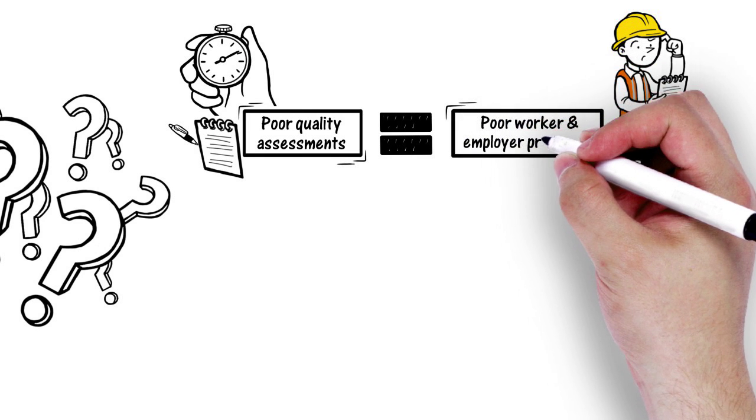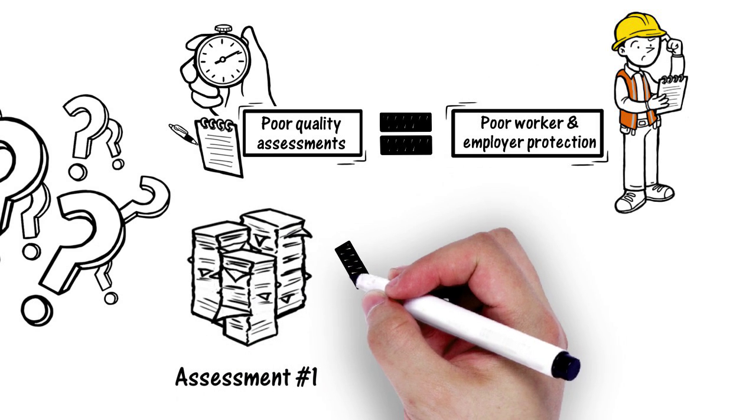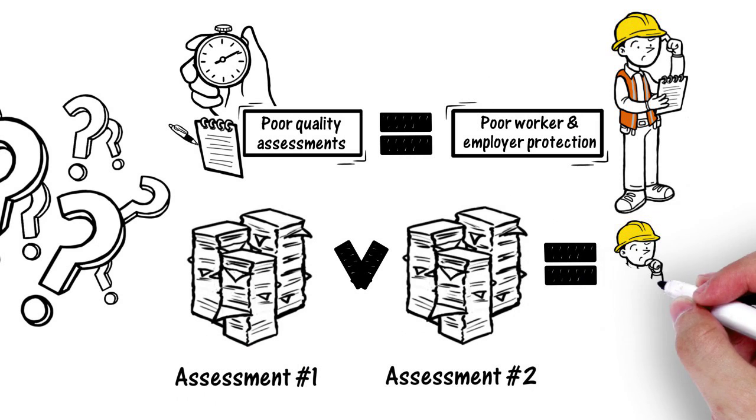All these inaccuracies can create poor quality assessments and any ongoing exposure data collation which risk reduction activities are reliant upon to protect workers' welfare. Later, measuring the effectiveness of activities by further assessments will also be compromised by comparing both sets of poor data.